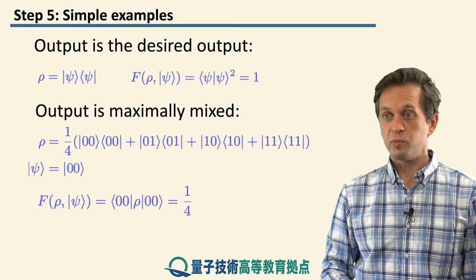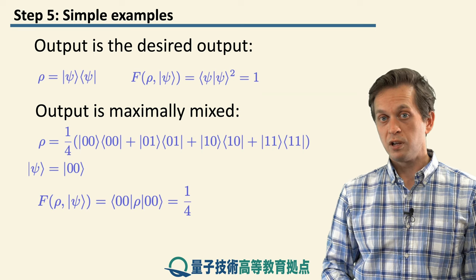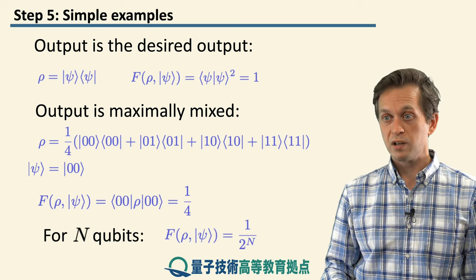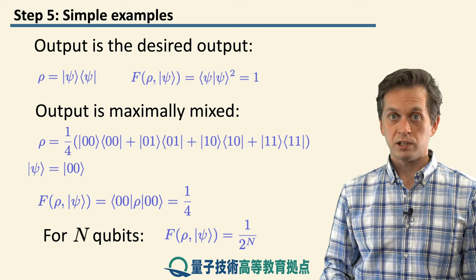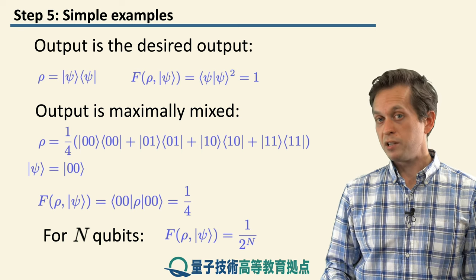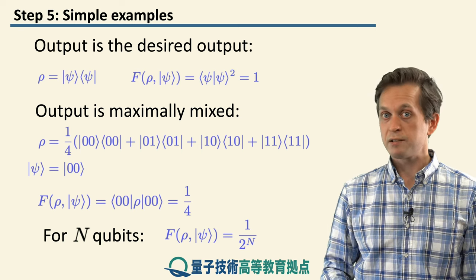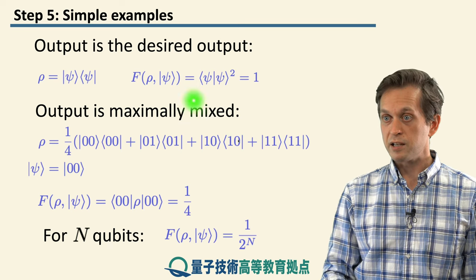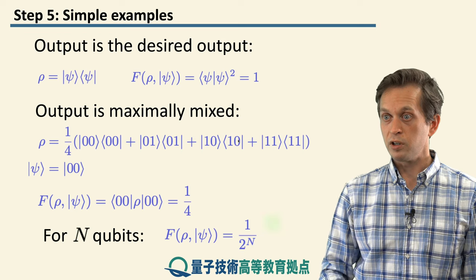Then we can again compute the fidelity, and it's one quarter. So you can see the pattern here, that in fact for N qubits, if we are trying to initialize all of them in the 0 state, but at the end our actual output is a maximally mixed state of N qubits, the fidelity scales as 1 over 2 to the N.